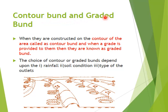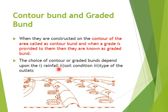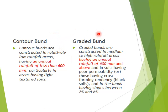There are two types of bund we are going to see: one is contour bund and another one is graded bund. A contour is simply a line joining points having the same elevation. When I construct a bund along the contour line, it is called a contour bund. If I provide a grade — that is, a slope — for the bund, then it is called a graded bund. The construction of the bund depends upon rainfall, soil condition, and the type of outlets. The major difference between contour and graded bunds is as follows.